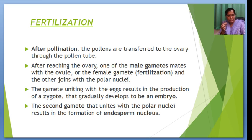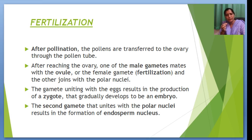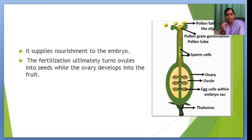What is fertilization? After pollination, the pollen are transferred to the ovule through the pollen tube. After reaching the ovule, one of the male gametes fuses with the ovule or the female gamete, which is known as fertilization, and the other joins with the polar nuclei. The gametes mating with the egg result in the zygote, that gradually develops into an embryo. The second gamete that unites with the polar nuclei results in the formation of the endosperm nucleus. The main function of the endosperm nucleus is to supply nourishment to the embryo. Fertilization ultimately turns the ovule into a seed, while the ovary develops into the fruit. We can see all the processes in our diagram.